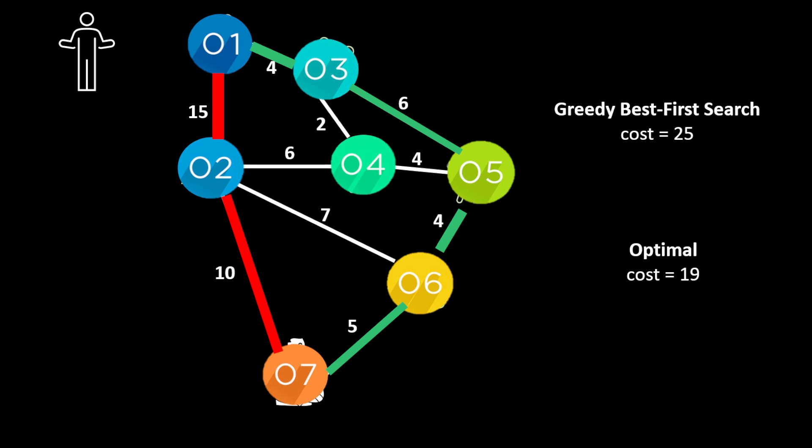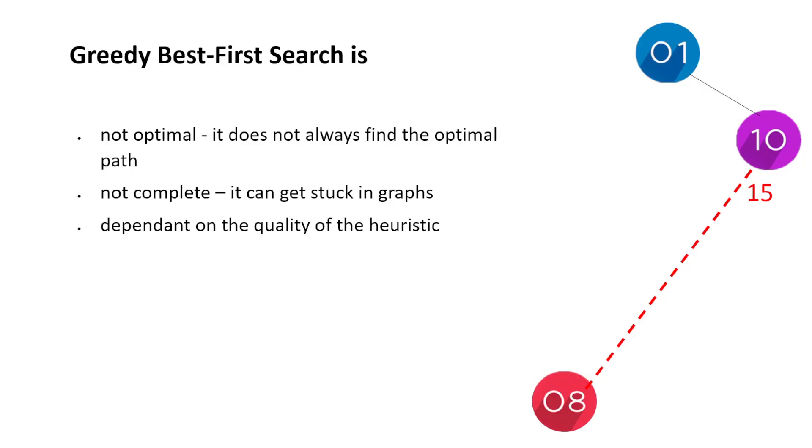So when we look at the greedy best-first search, it will find a reasonable path, not necessarily the optimal path. So it's not optimal, it can get stuck in graphs so it's not complete, and of course it depends on the quality of the heuristic, as all informed searches do.